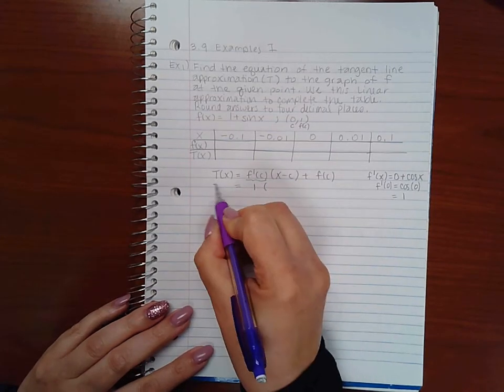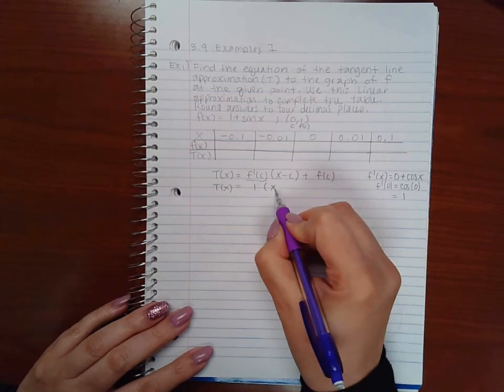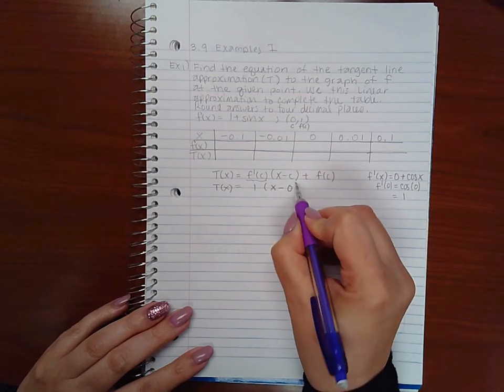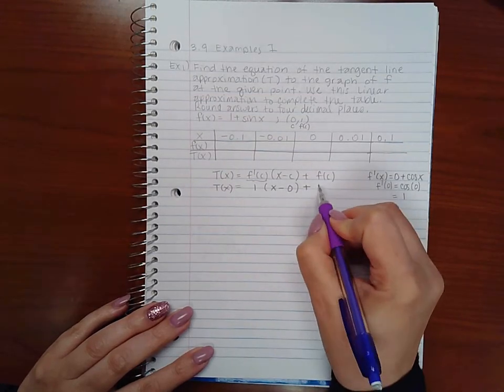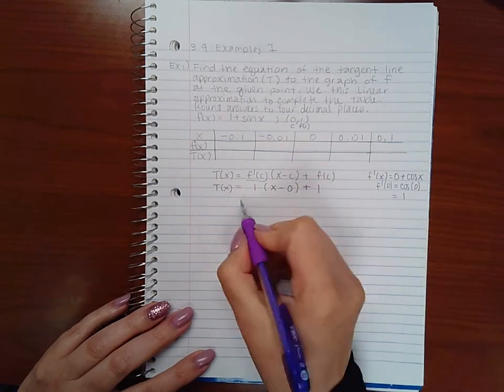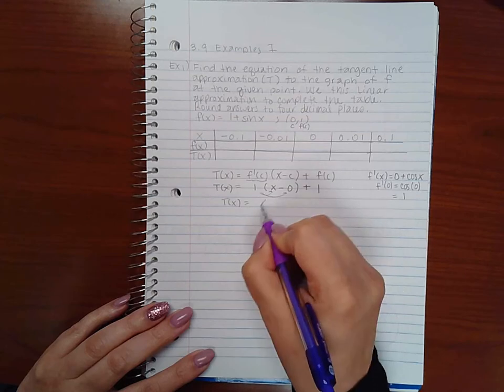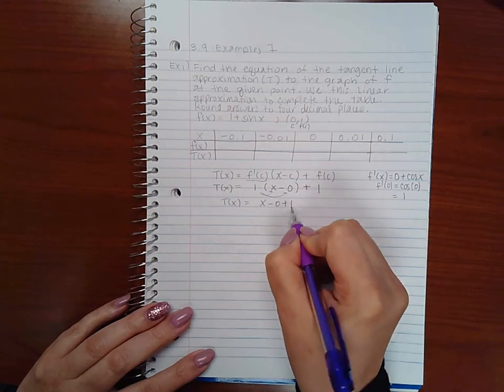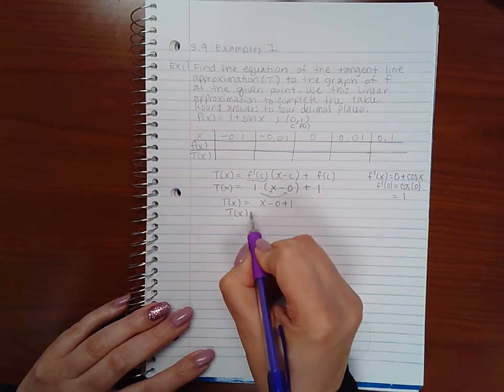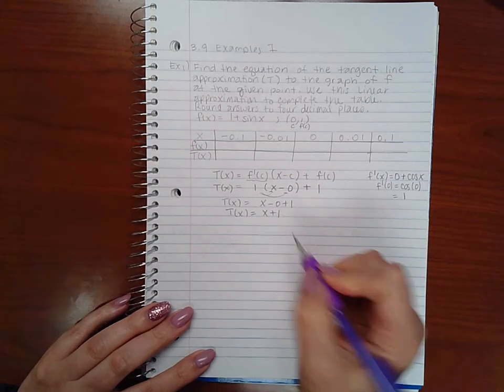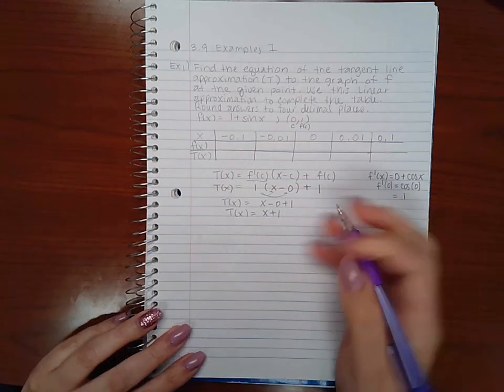So f'(c) = 1, x minus c is (x - 0), and f(c) = 1. The equation becomes T(x) = 1(x - 0) + 1. If I distribute this, it's x - 0 + 1, or just T(x) = x + 1.